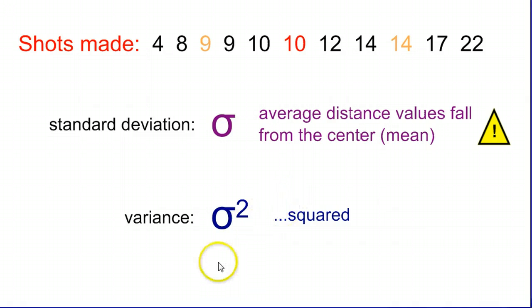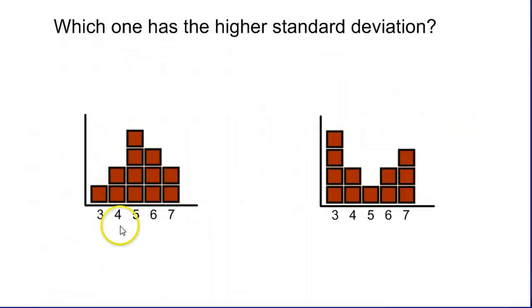So when finding standard deviation, which one has a larger or smaller average distance from the middle? We can look at that on a graph like this. The center of this graph on the left is going to be somewhere in the fives. So you can kind of see the fives. On average, how far apart are things from the middle?